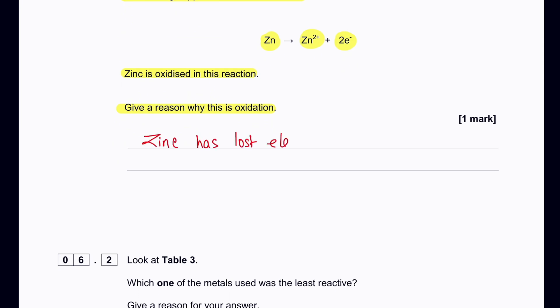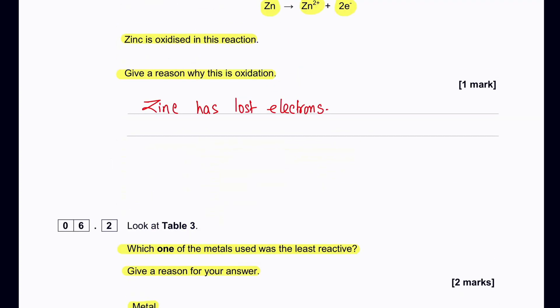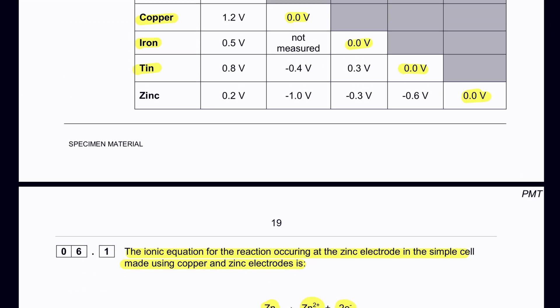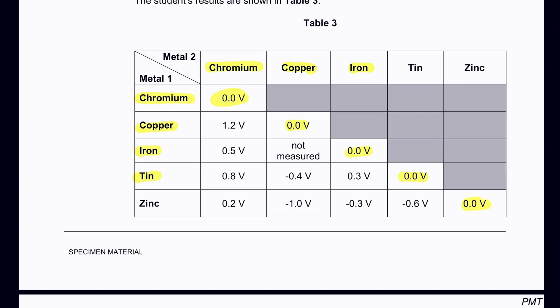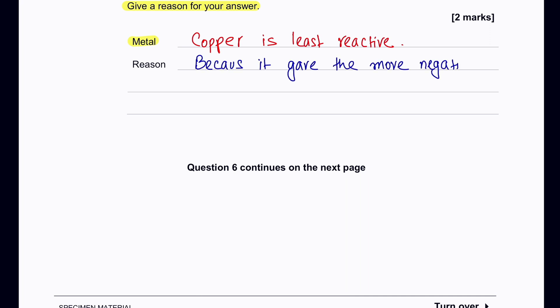Which of the metals used was the least reactive? The metal that produces the most negative voltage values is the least reactive. Looking at the data, copper produces the most negative values, so copper is the least reactive. The reason is that it gave the most negative voltage when it was metal two.